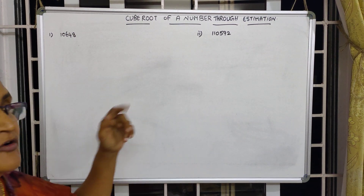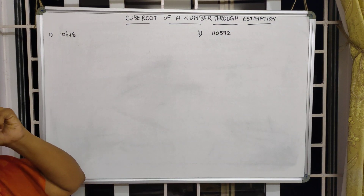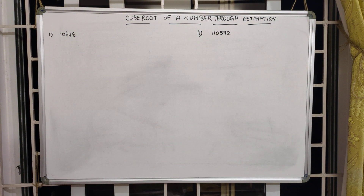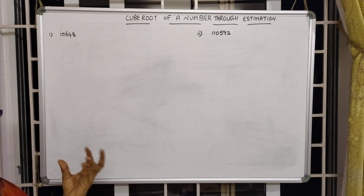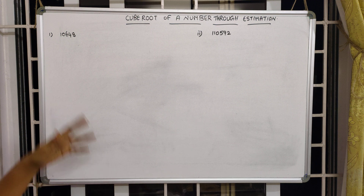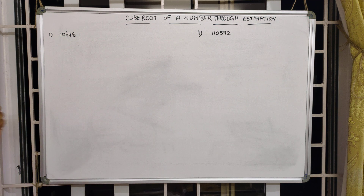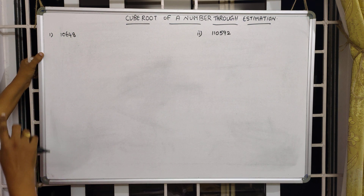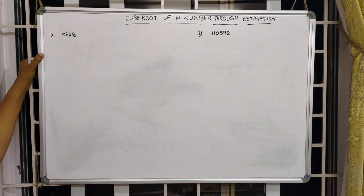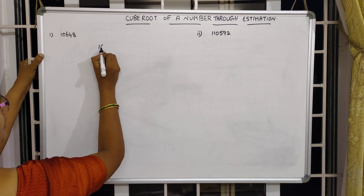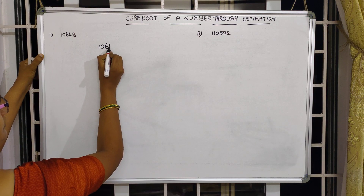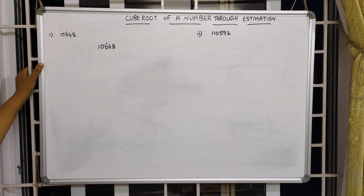Hi everyone, let us see the next concept: cube root of a number through estimation. We are going to find out the cube root of a number by the estimation method. Look at the board. Here, the first example is 10648. The given number is 10648 and we are going to divide this number into two groups.